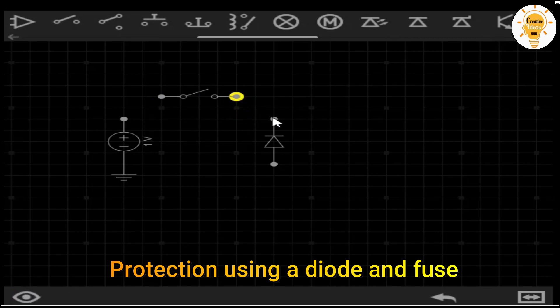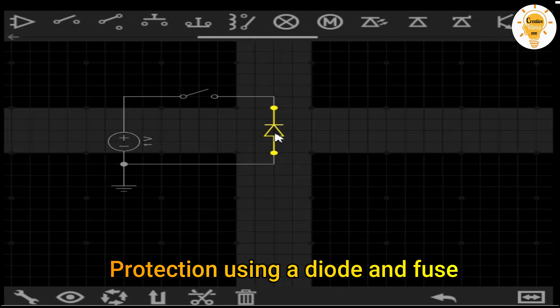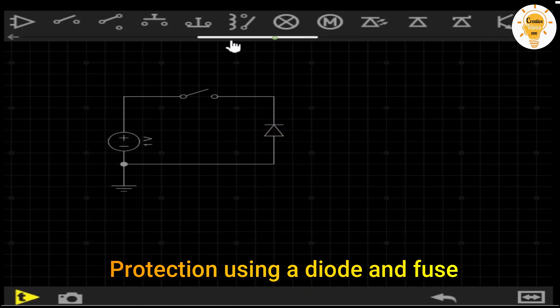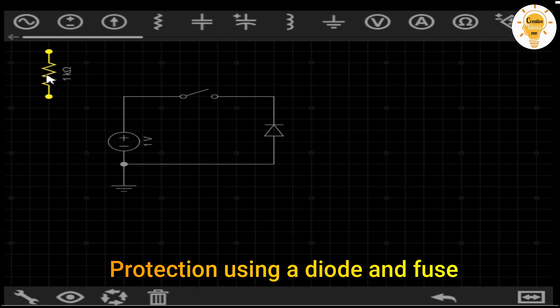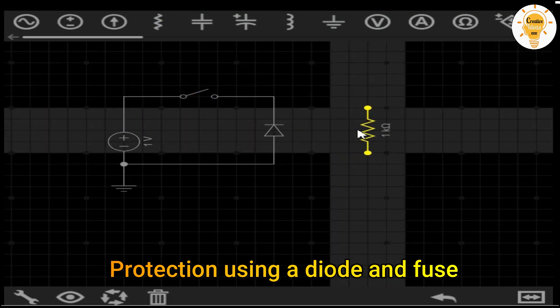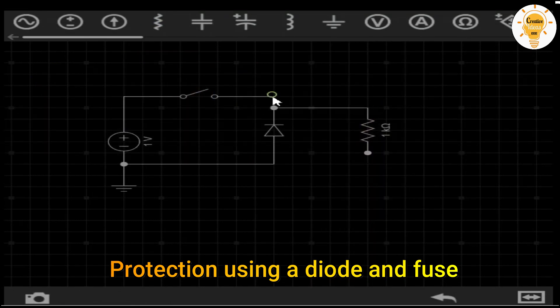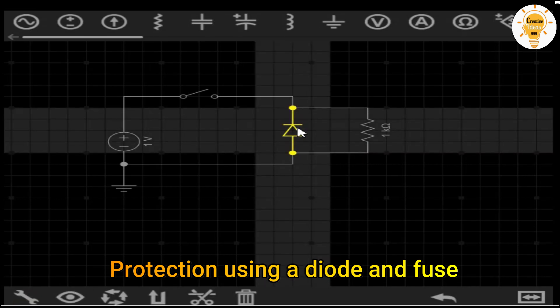By connecting the source with the correct polarity, our circuit will work normally. However, when connected to reverse bias, the diode will go into direct bias driving all current through it. When this happens, the current through the fuse will be higher than the maximum withstand and will melt opening the circuit and protecting it.